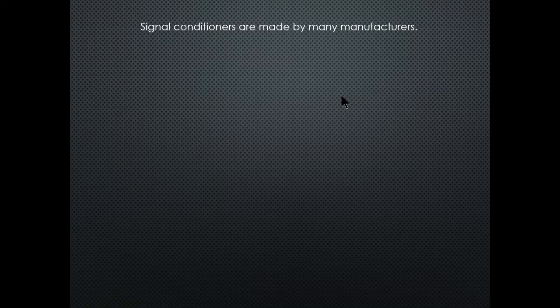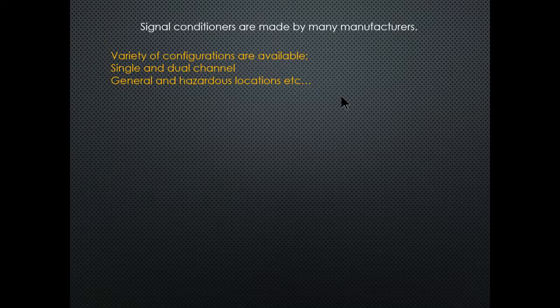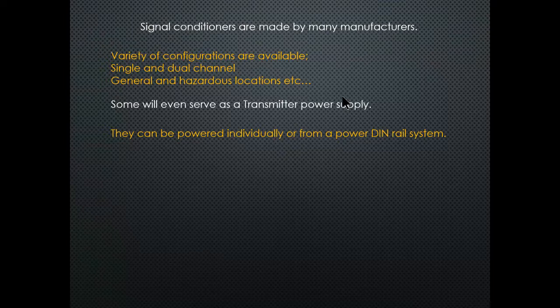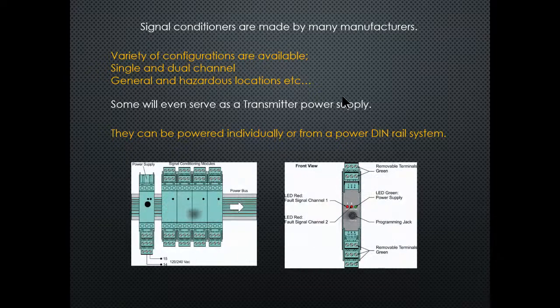Signal conditioners are made by many manufacturers and a variety of configurations are available — single and dual channel, for general and hazardous locations. Some will even serve as transmitter power. They can be powered individually or from a DIN rail. You can plug these modules into a DIN rail and they will be powered up, or you can power them individually. On the right-hand side is a single unit, and on the left-hand side is a power supply that powers the power bus on the back.